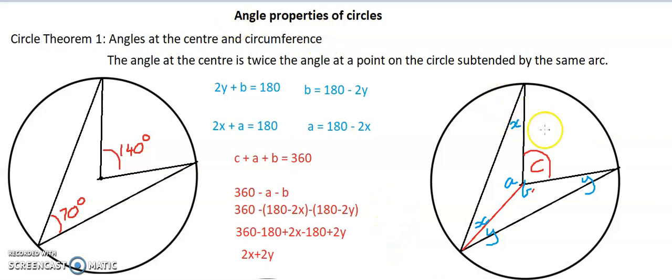So now I know my degrees for c is 2x + 2y. Now this shows us our understanding that it is double this angle right here. So it equals our rule of the angle at the center is twice the angle at a point on the circle subtended by the same arc.